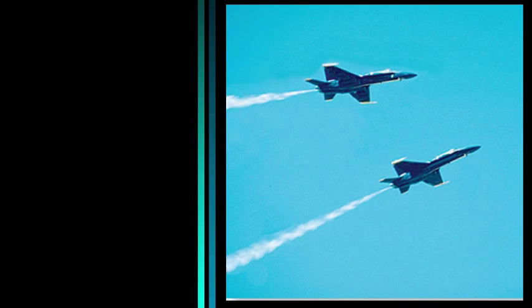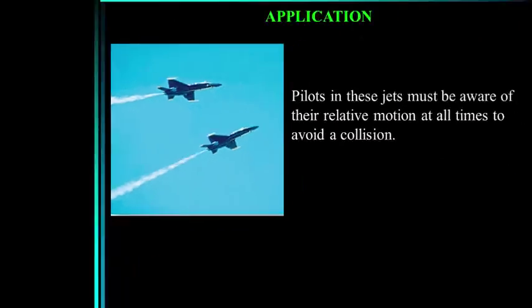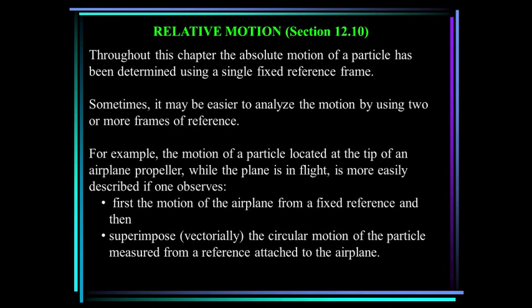Here are two jets flying in formation. The pilots want to know their relative motion at all times in order to avoid a collision. So far in this course, the absolute motion of a particle has been determined using a single fixed reference frame. Sometimes it may be easier to analyze the motion using two or more frames of reference. For example, the motion of a particle located at the tip of an airplane propeller while the plane is in flight is more easily described if one observes first the motion of the airplane from a fixed reference, and then superimposes vectorially the circular motion of the particle measured from a reference attached to the airplane.